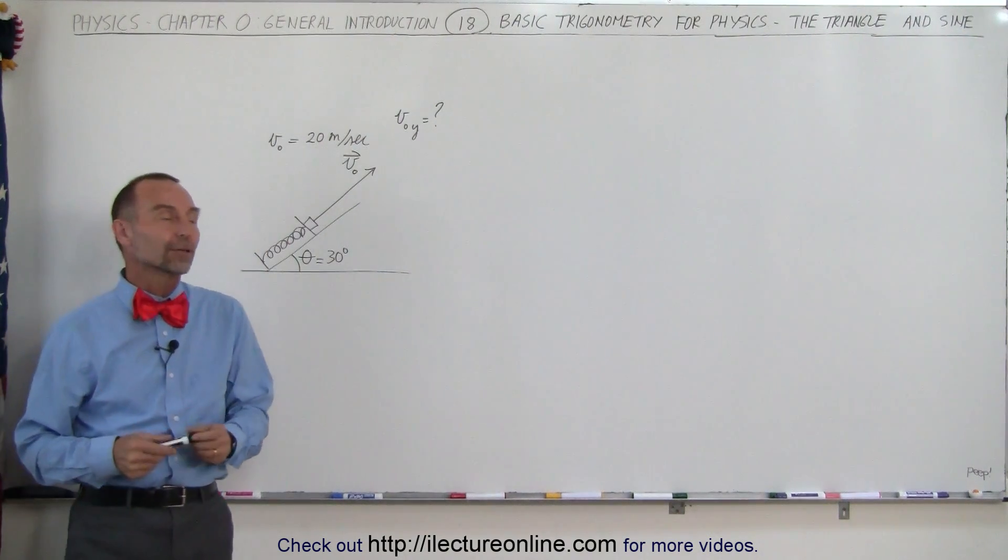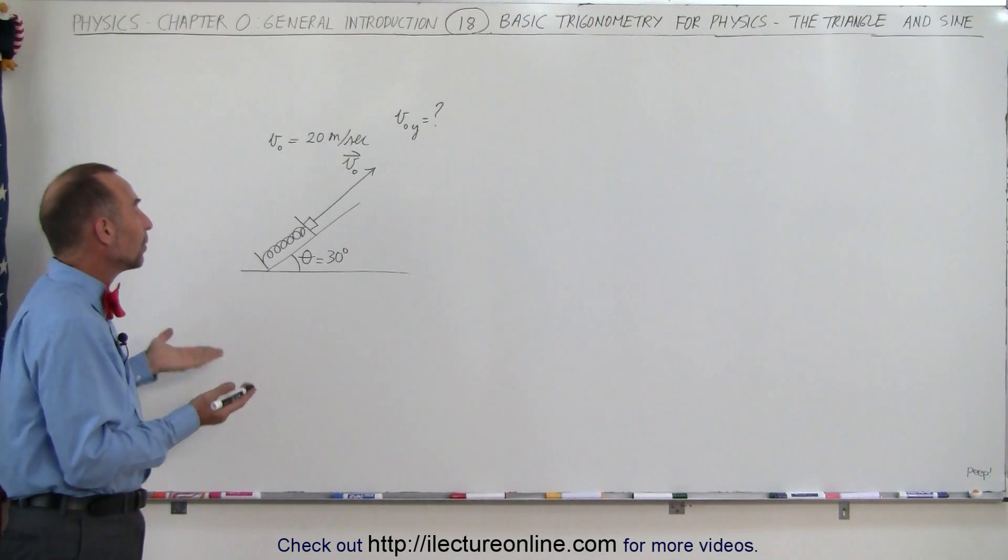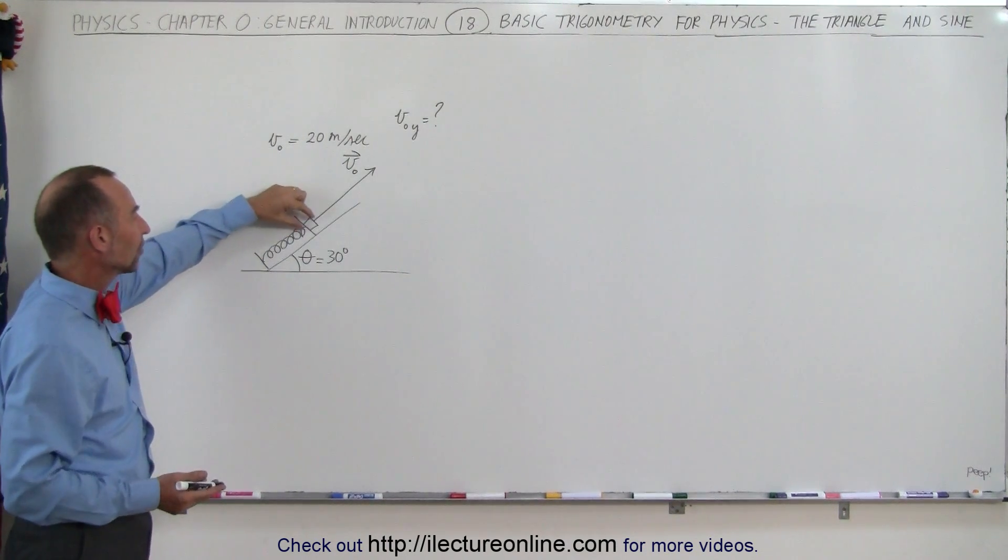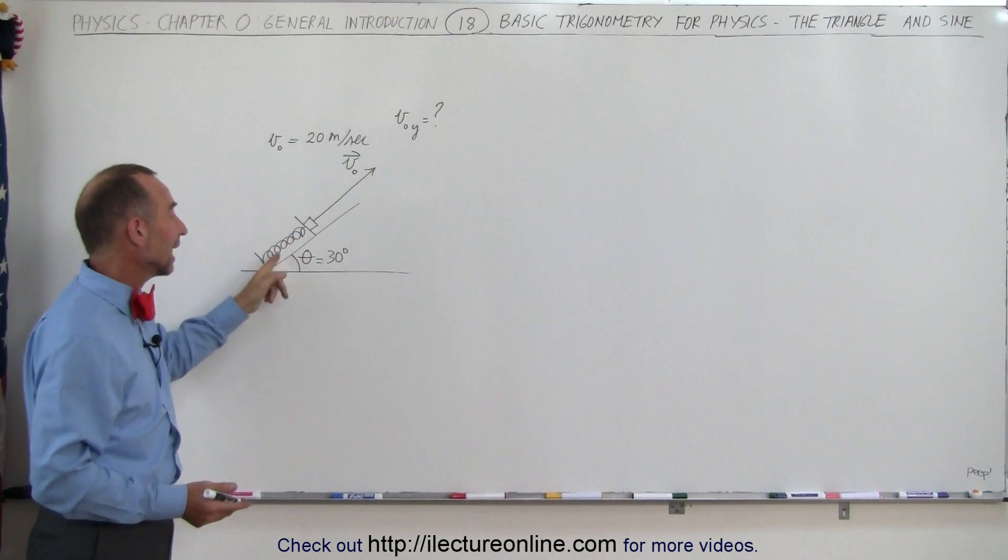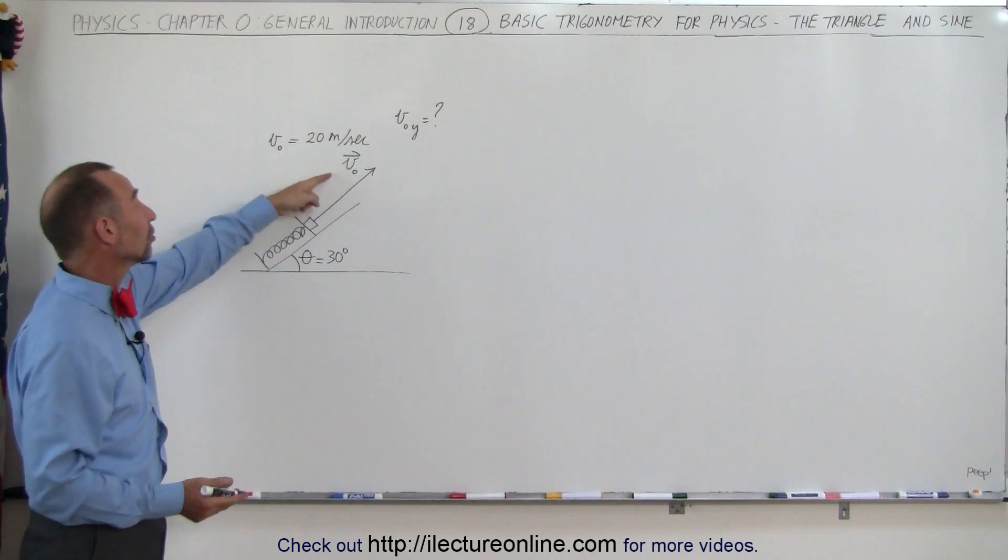The first one is the sine of the angle. And so let's say we have an example problem here. We have a spring-loaded gun where we have some object that's being shot into the air at an angle of 30 degrees with some initial velocity.